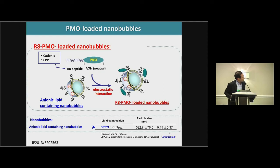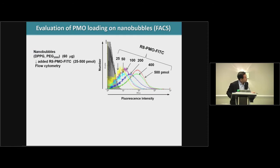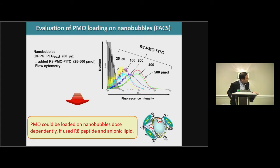We developed PMO-loaded nanobubble. In this case, we used oligo-arginine peptide — as you may know, this peptide is also a cell-penetrating peptide. PMO was conjugated with this peptide and then loaded onto the anionic lipid-containing nanobubble. The mean diameter was approximately 500 nanometers. This result shows the interaction of PMO and nanobubble by flow cytometry: PMO could be loaded dose-dependently.